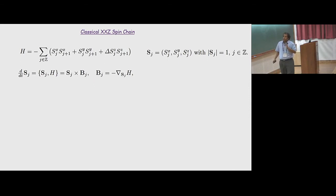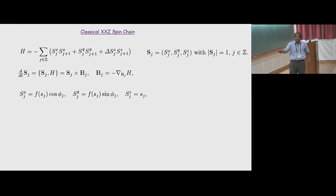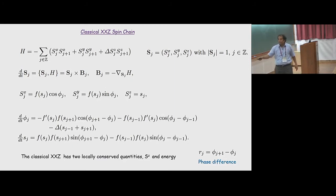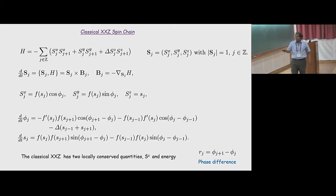Now let me go to the classical XXZ spin chain. It turns out the classical XXZ spin chain has a very similar story to DNLS, with some subtle differences. This is the Hamiltonian and equations of motion. You can parametrize it conveniently and write the equations of motion. XXZ also has two conserved quantities — Sz and energy — but then there is a phase difference that starts becoming conserved at low temperatures, similar to DNLS.